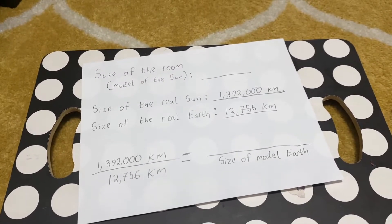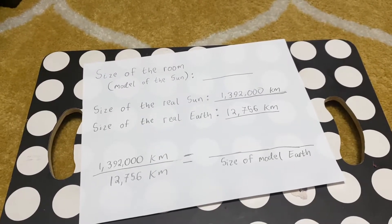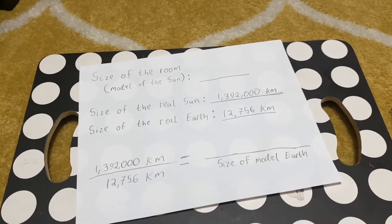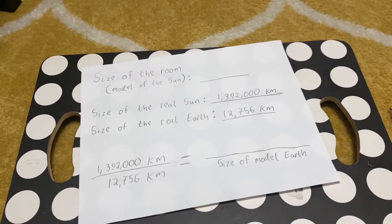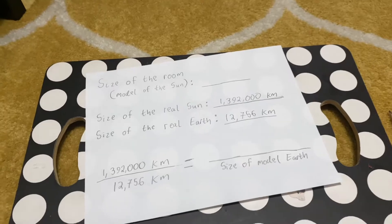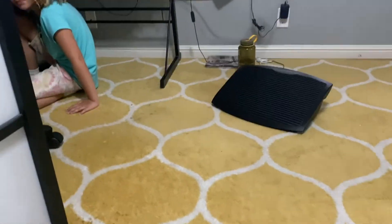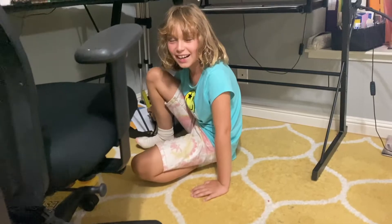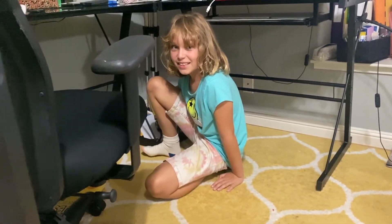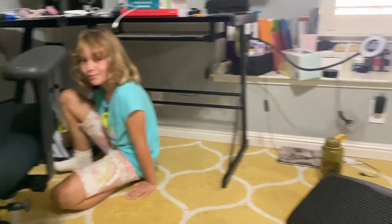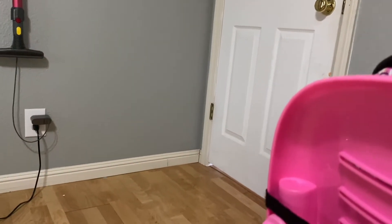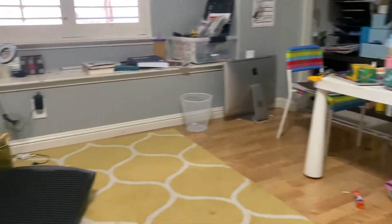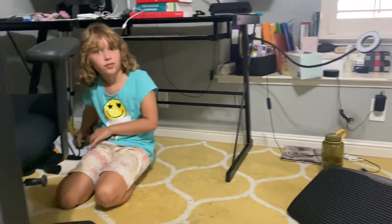Hello, and welcome to the directional video for the scaling of the solar system lab, a lab that you can do at home with everyday objects. I'm at home in my home office, and my lab assistant — also my daughter — is going to measure the diagonal length of this room, because this room is going to represent the sun. The diagonal length from corner to corner will represent the diameter of the sun.